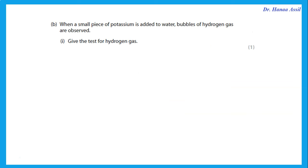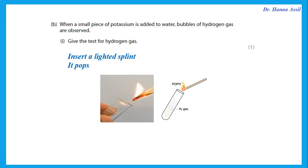When a small piece of potassium is added to water, bubbles of hydrogen gas are observed. Give the test for hydrogen gas. Insert a lighted splint — it pops. Remember: lighted, not glowing. Glowing is for oxygen.